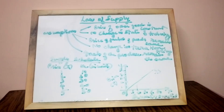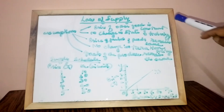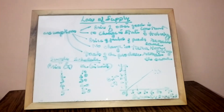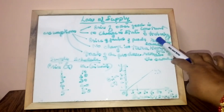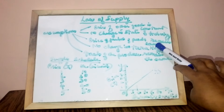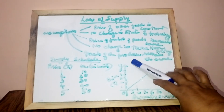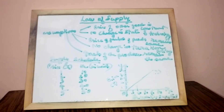The producer's behavior is studied under the law of supply. The assumptions of the law of supply are: price of other goods is constant, no change in state of technology, price of factors of production remains the same, no change in taxation policy, and goals of the producer remain the same.